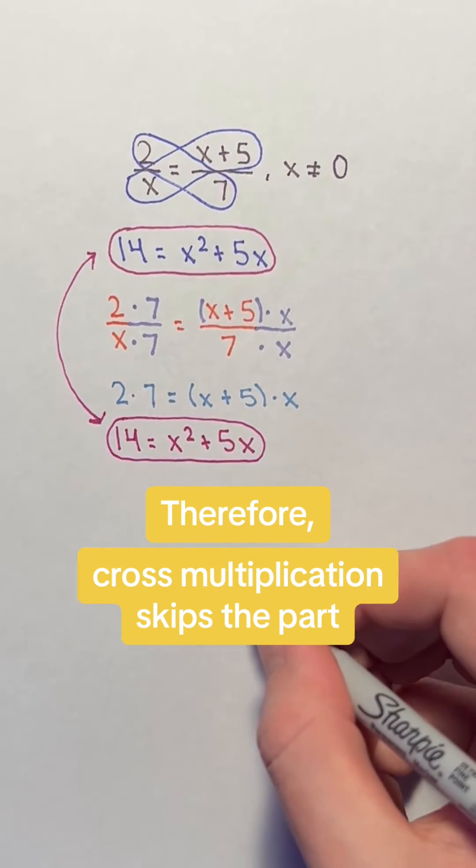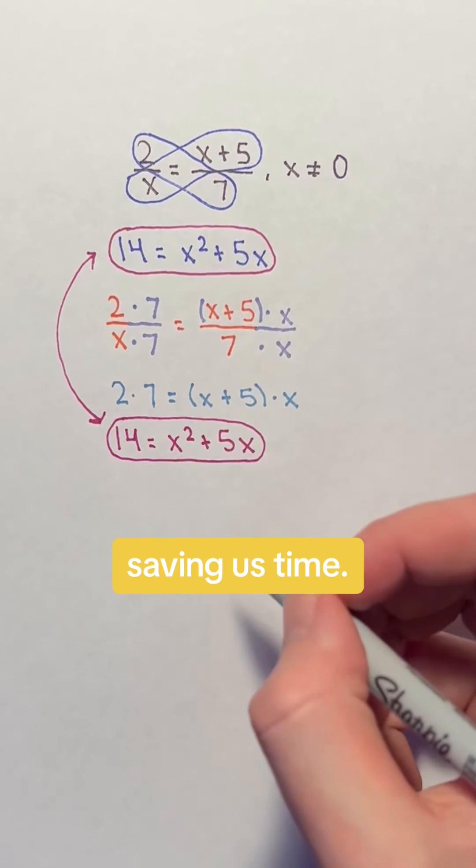Therefore, cross multiplication skips the part of finding a common denominator, saving us time.